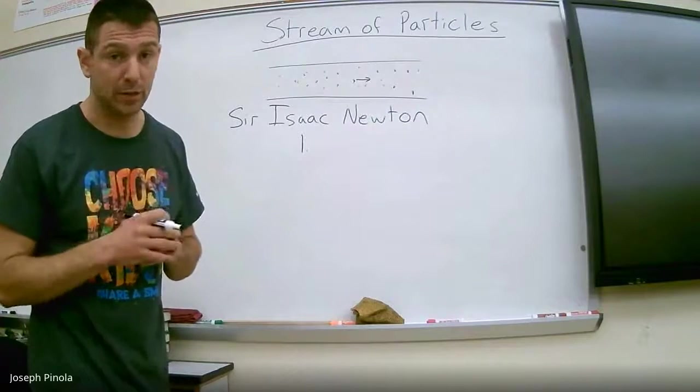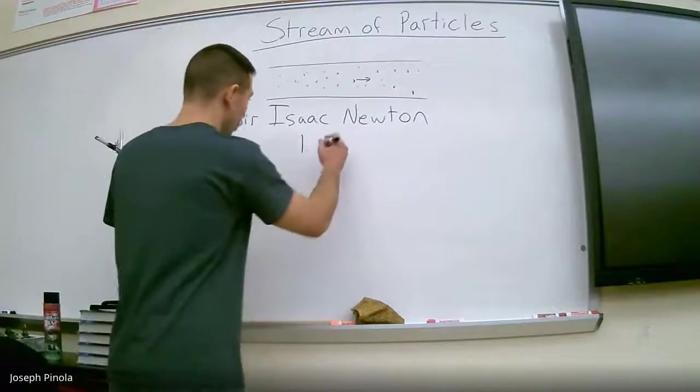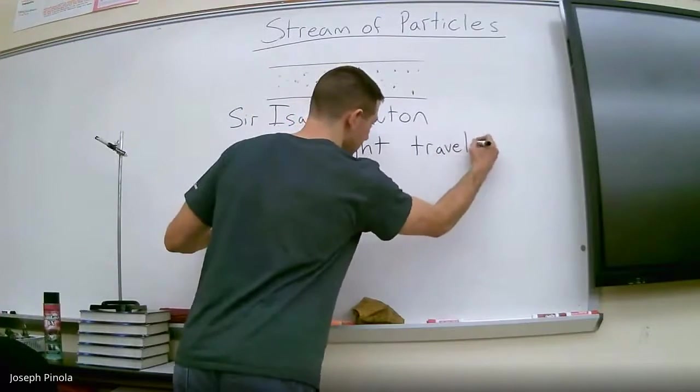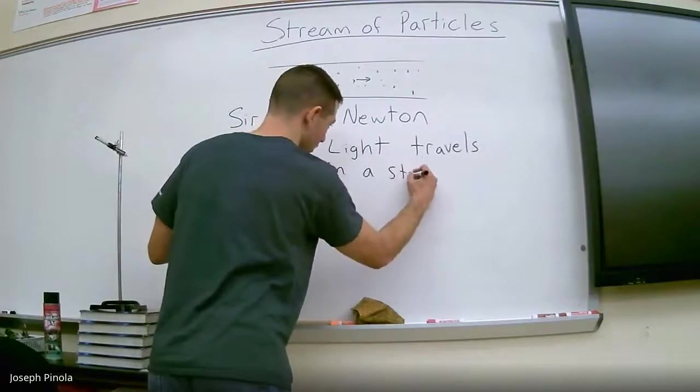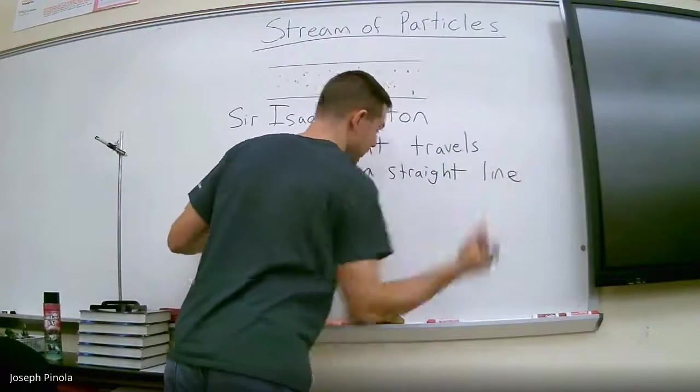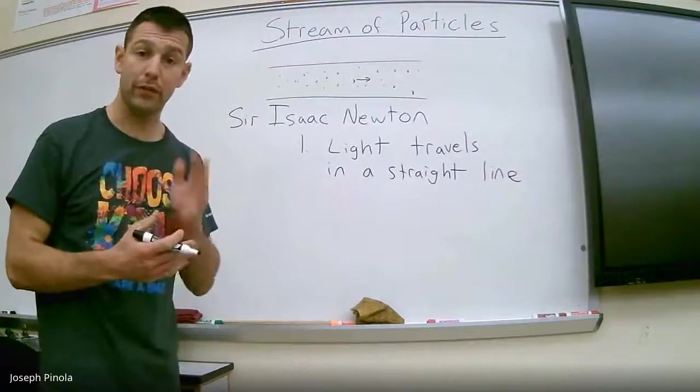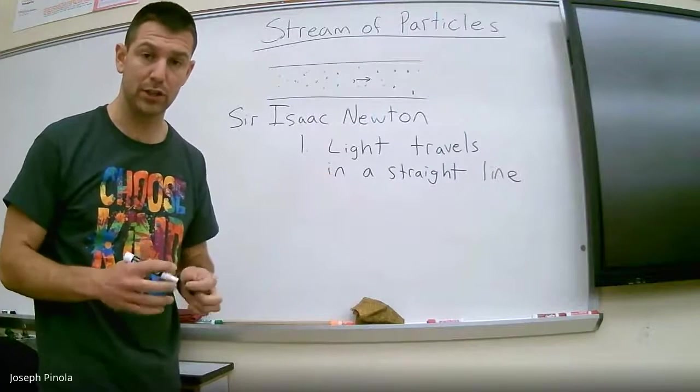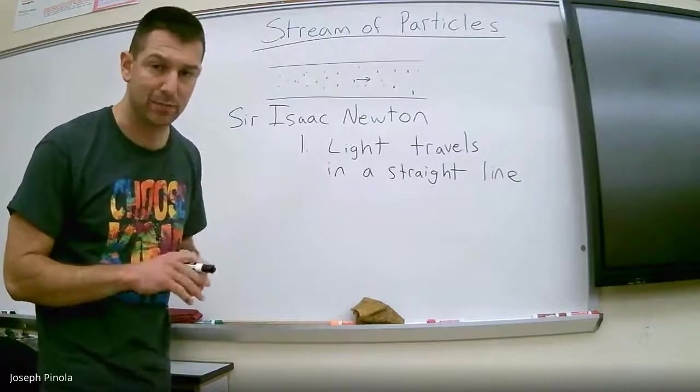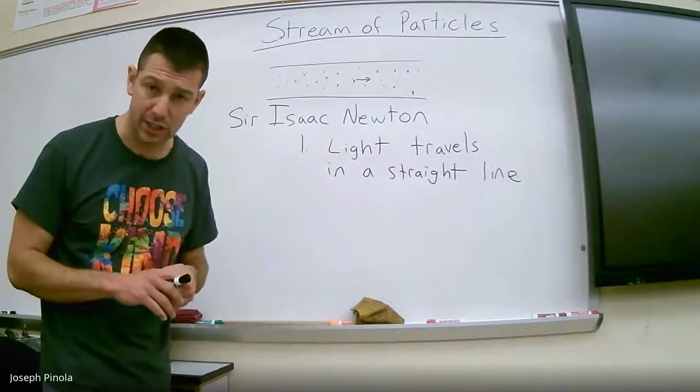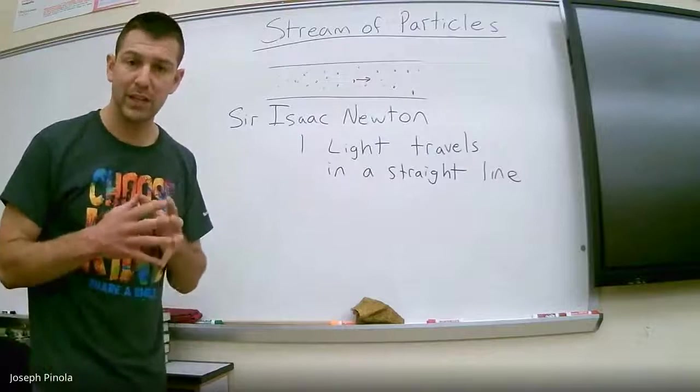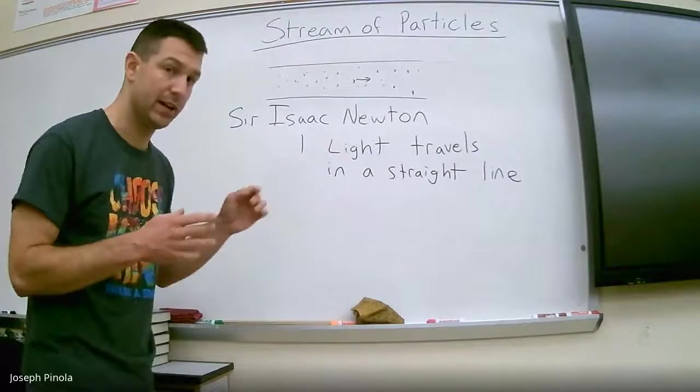Newton's first reason for saying that light was a stream of particles was that light travels in a straight line. He felt that if light moved in a straight line directly from one place to another, that it had to be a bunch of little particles that were also moving in that same straight line. But it can be a little bit hard to see light actually moving in a straight line. So let's take a look at light as it moves as Newton said in a straight line.